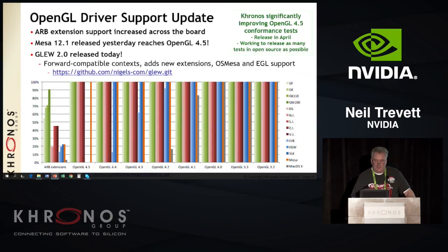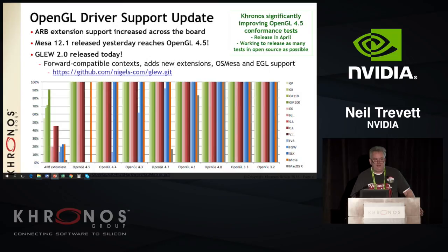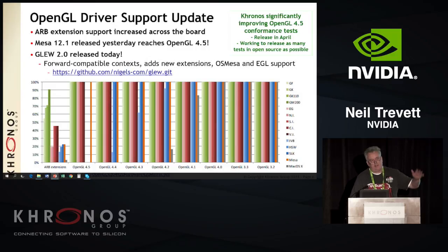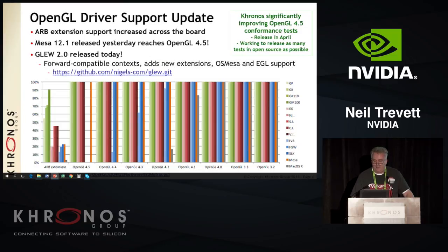Thanks to Christoph for continuing to put together these charts. We're actually investing quite heavily in making the OpenGL 4.5 conformance tests more robust, which in turn flows back into OpenGL ES. We did a new release of the tests in April and we're continuing to work, with more releases coming — continually upping the bar for what it means to be OpenGL conformant. We're working to put as many of those tests into open-source as we can, similar to what we've done with Vulkan.